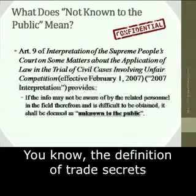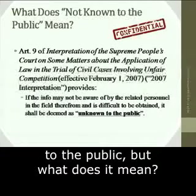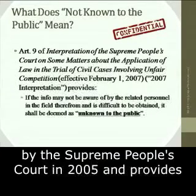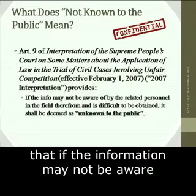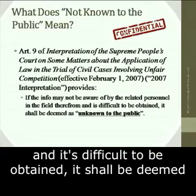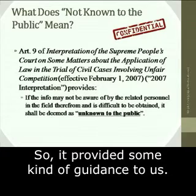The definition of trade secrets under Chinese law includes the requirement of 'not known to the public.' But what does it mean? Article 9 of an interpretation promulgated by the Supreme People's Court in 2005 provides that if the information may not be known to the related personnel in the field, and it is difficult to be obtained, it shall be deemed as unknown to the public. So it provides some kind of guidance to us.